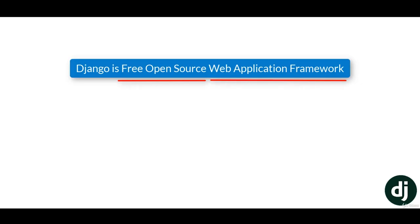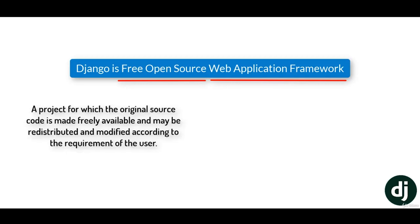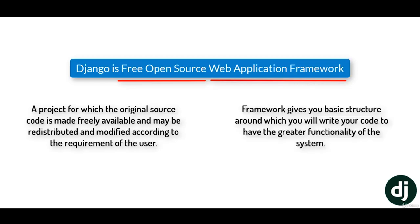If I talk about open source, it is a project which is available to all and anyone can contribute to it — it can be a framework, a library, or a program. Even you can contribute to Django through financial donation or by giving input through code. The second important term is web application framework. A framework gives structure to a system, so a web application framework gives a predefined plan for our web application.